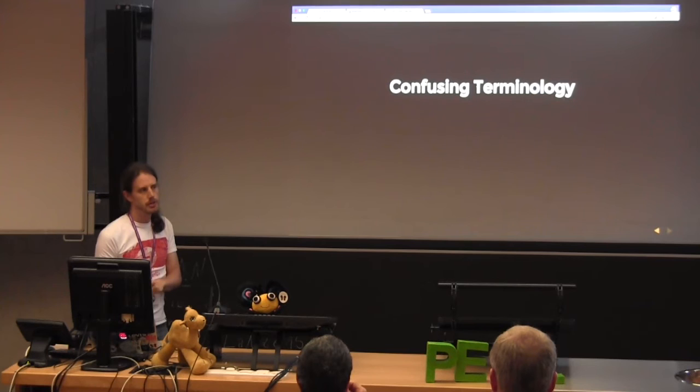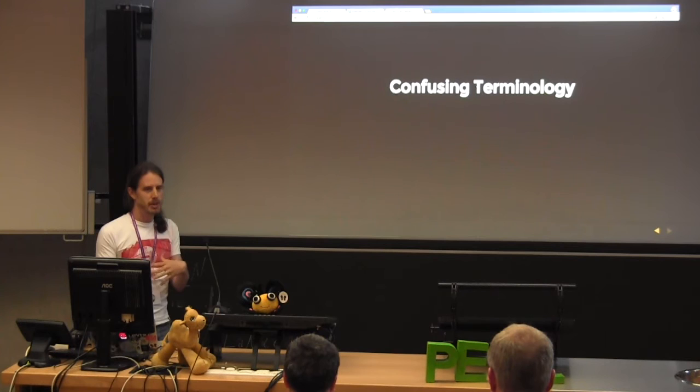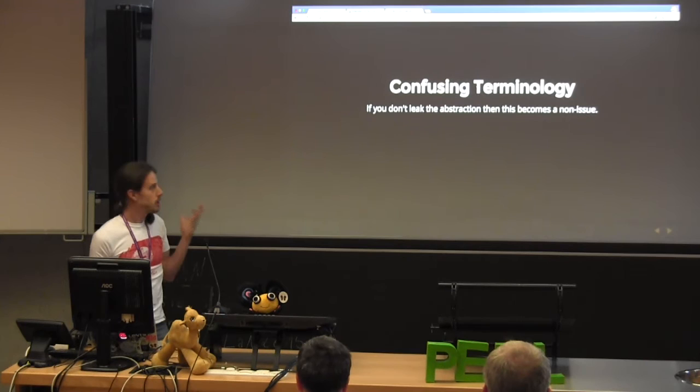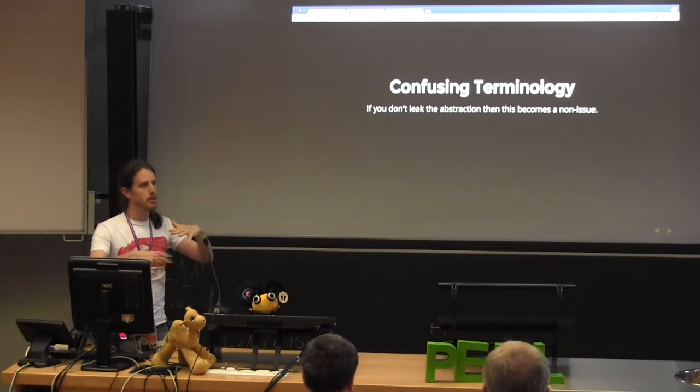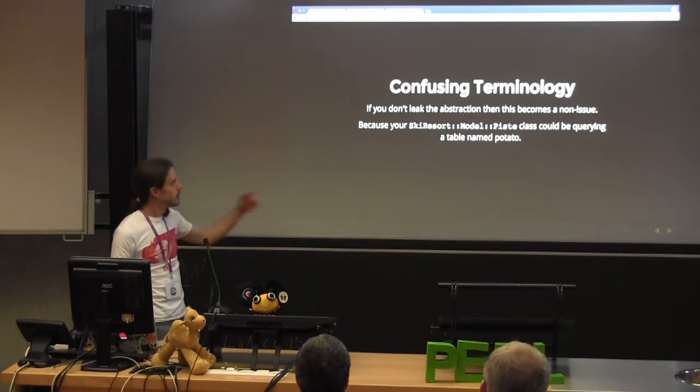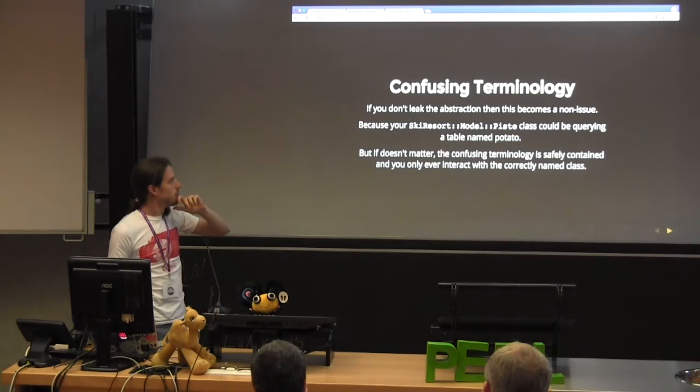You might find some confusing terminology. In our case, we have a database that was forked — we saw a gap in the market and forked it. So we have tables named one thing that actually represent something else entirely, which is very confusing at first. But that shouldn't matter, because if you're not leaking the abstraction and you have a model class that knows about this confusing terminology, it's not a problem. It's contained in one place.